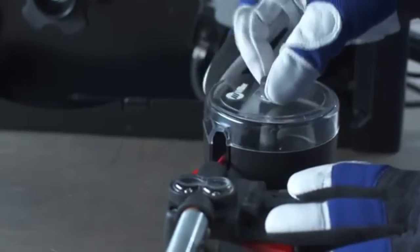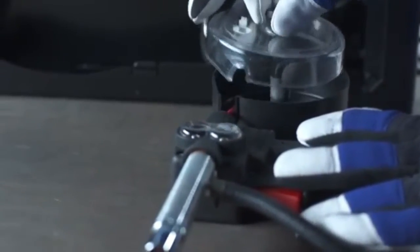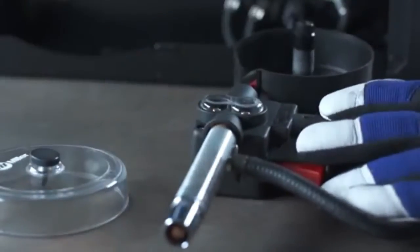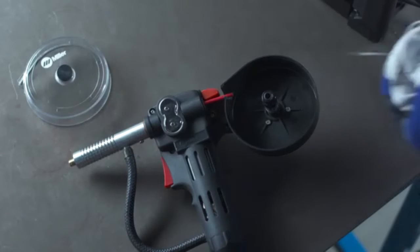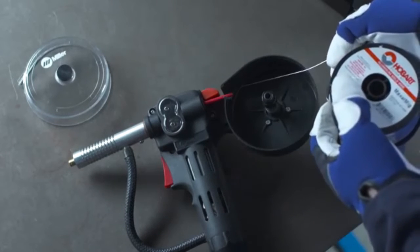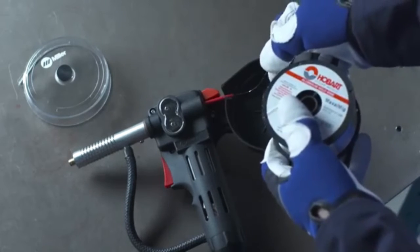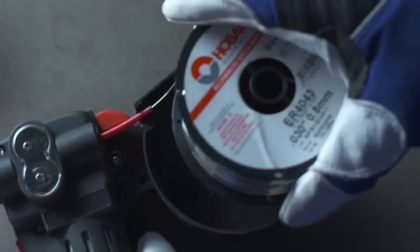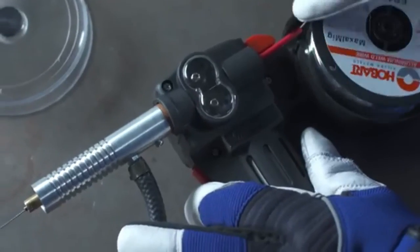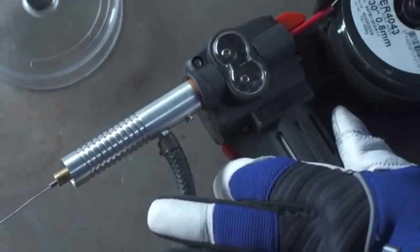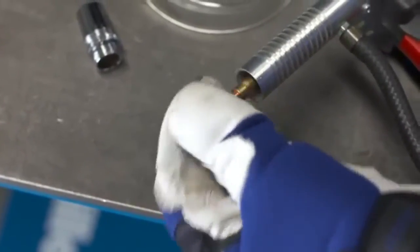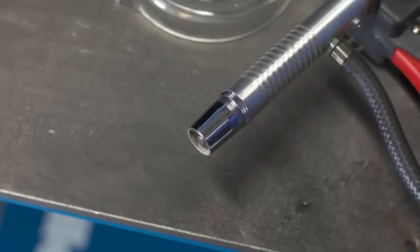The spool gun holds the spool of wire, so first remove the spool cover and lay it on a flat surface. Start your spool of aluminum wire by straightening about four inches of wire. Begin to thread that wire into the inlet guide before placing the spool in the gun. Pull the gun trigger to allow the drive rolls to pull the wire through and push out to the end of the gun. Install the proper contact tip. Replace the nozzle and the spool cover.